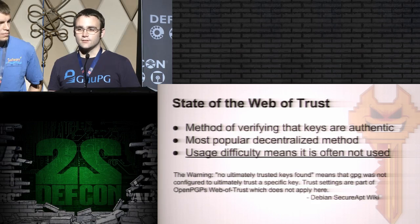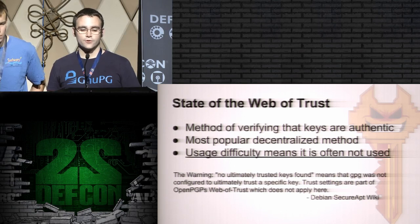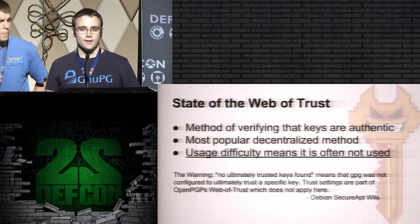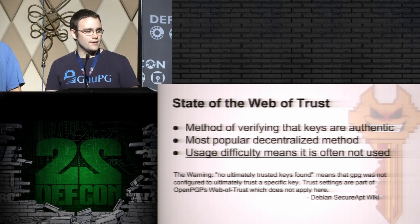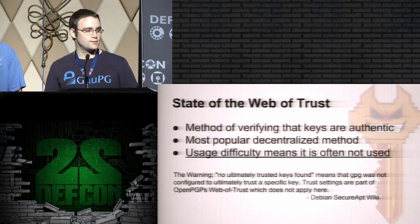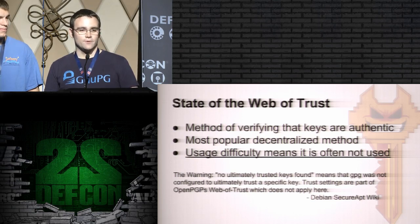GPG as a tool has a somewhat complicated interface. You have to use arcane command line options, interactive mode, or other methods to verify that you trust a key — and it has lots of complicated questions that can scare off a less sophisticated user. Even Debian, which is well known for being a pretty secure operating system, tells users to ignore the message 'no ultimately trusted keys found,' because they didn't want to get into the web of trust. And we've all seen what happens when you tell users to ignore warning messages.